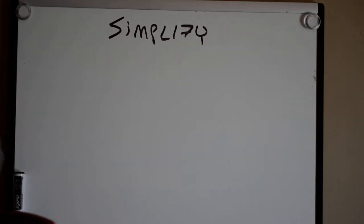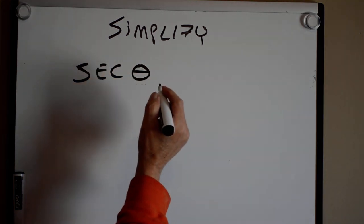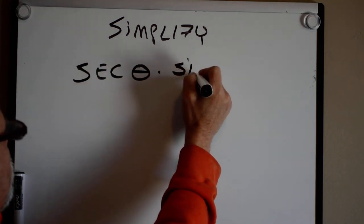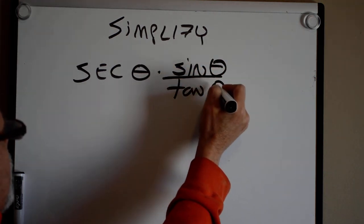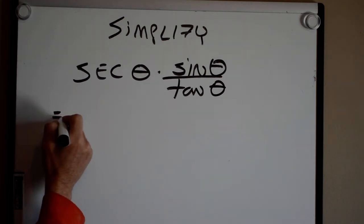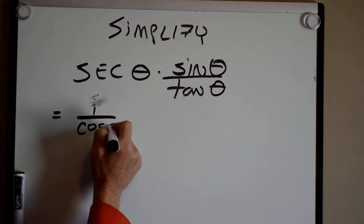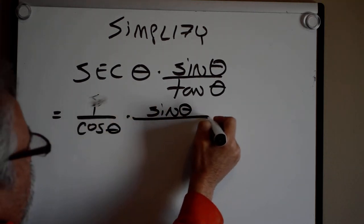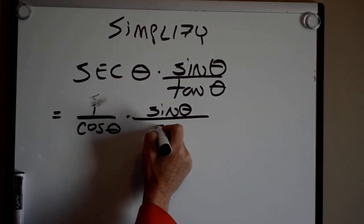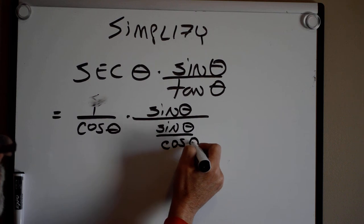So now then, let's do secant theta times the sine of theta over the tangent of theta. Well, again, we know secant is the same as 1 over cosine theta. Times, this is sine of theta over, while tangent is sine over cosine. I'll do it like this.